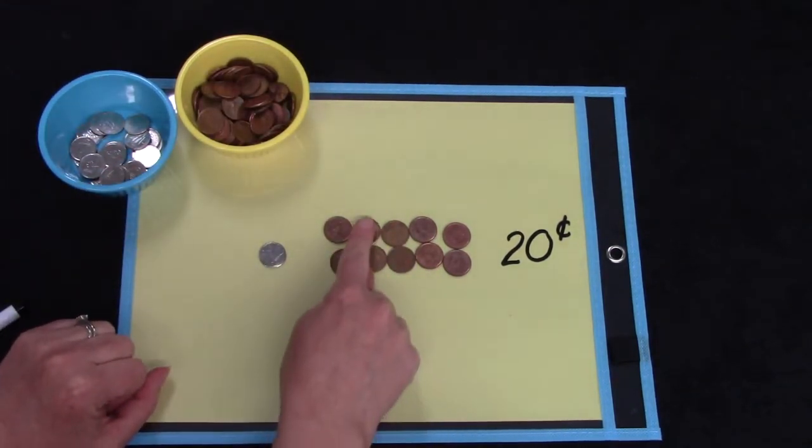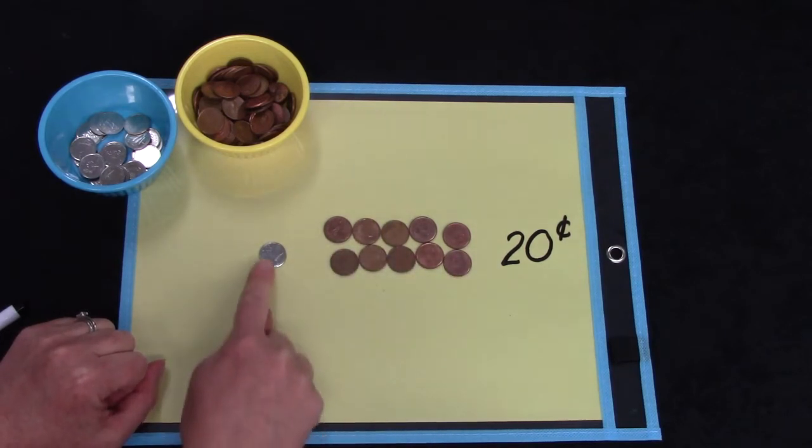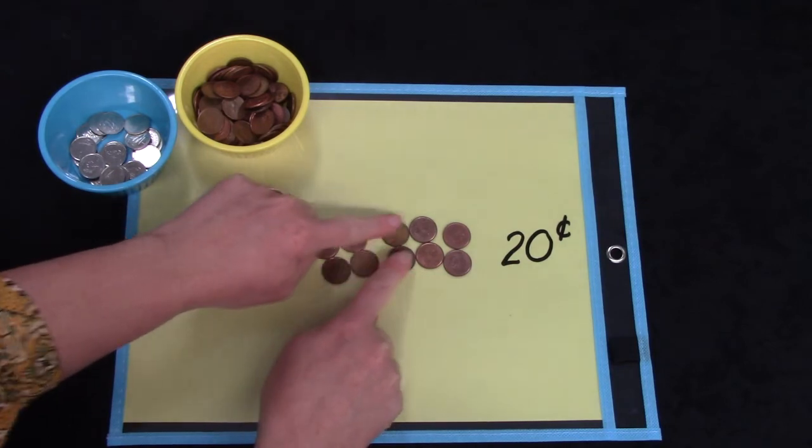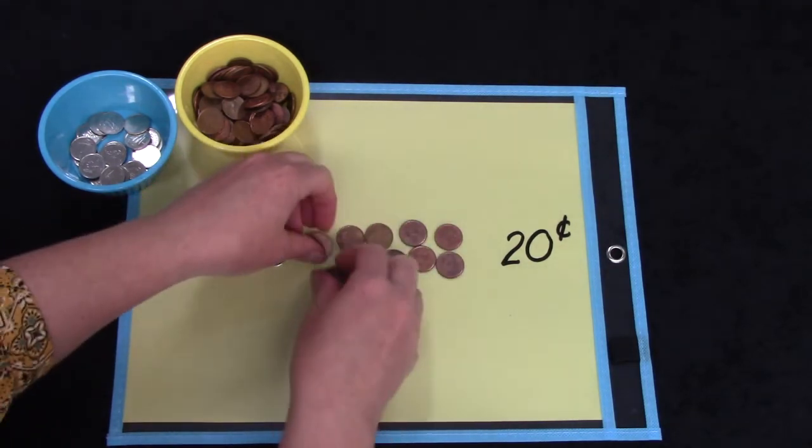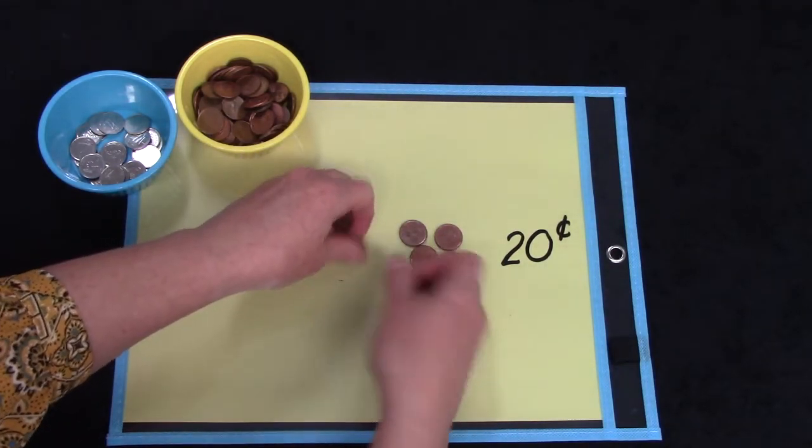Do I have enough pennies left over to trade for another dime? Let's count. 2, 4, 6, 8, 10. I do. I do have enough.